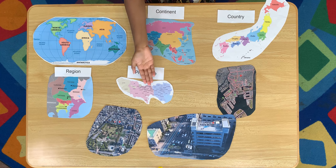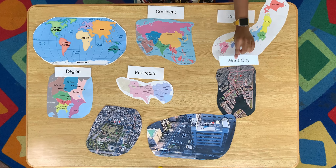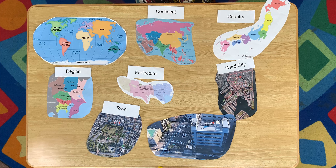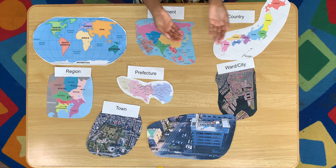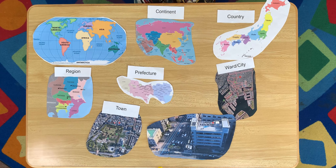Our region is the Kanto region, which is over next to the water. Our prefecture is Tokyo. Tokyo has many different wards or cities — do you remember what city Learning Tree is in? It's in Koto city, also called Koto ward. And what town is Learning Tree in? It's Kiba. And then finally we can find Learning Tree's neighborhood. There are so many things in this neighborhood! Down the street is a hospital and across the street are many restaurants.